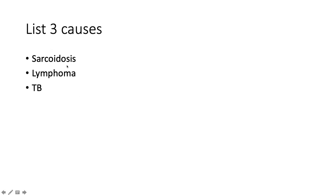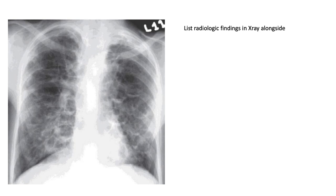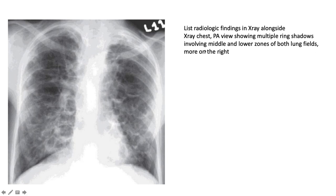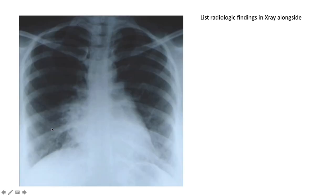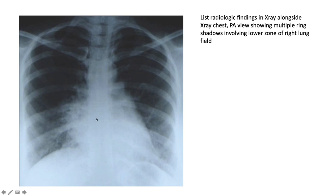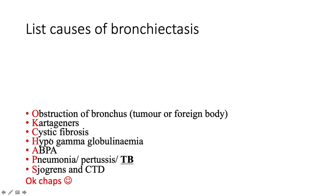This is a nice example of bilateral ring shadows involving the middle and lower zones of both lung fields, more so on the right. This patient has clubbing. It speaks to bilateral bronchiectasis. The same pathology is shown mainly on the right lower zone — ring shadows — indicating right-sided bronchiectasis.